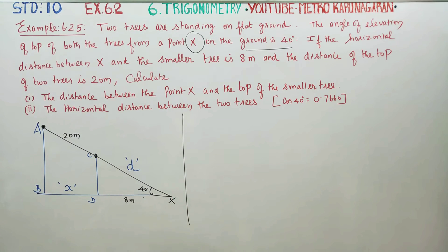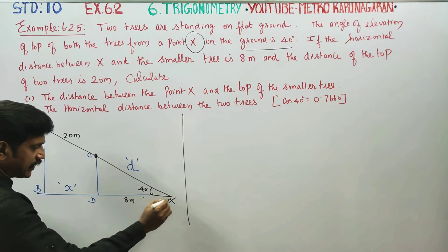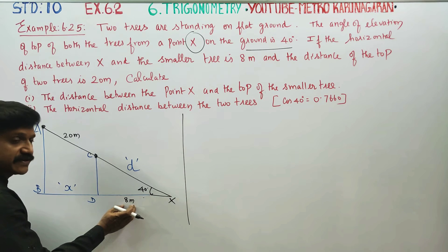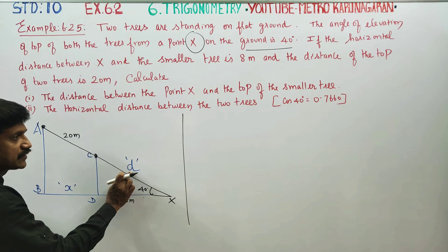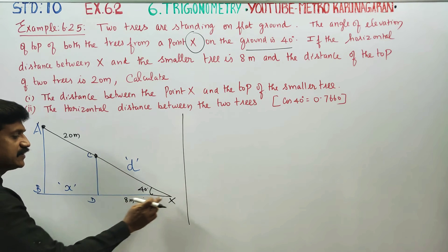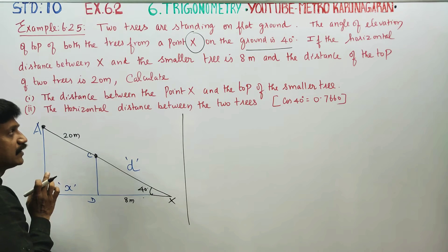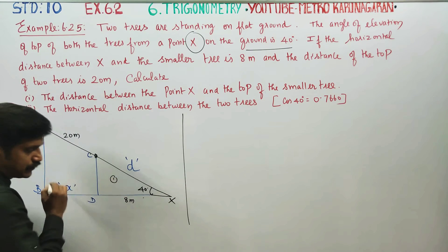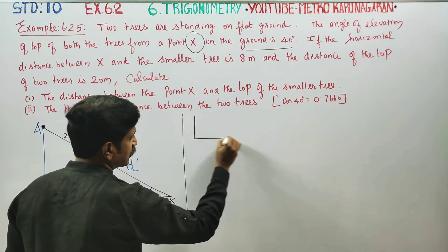Shall we start? First, if you look at the information in the triangle, one measurement is 8 meters. If you know X, the distance between X and the top of the small tree — let's draw a rough diagram.